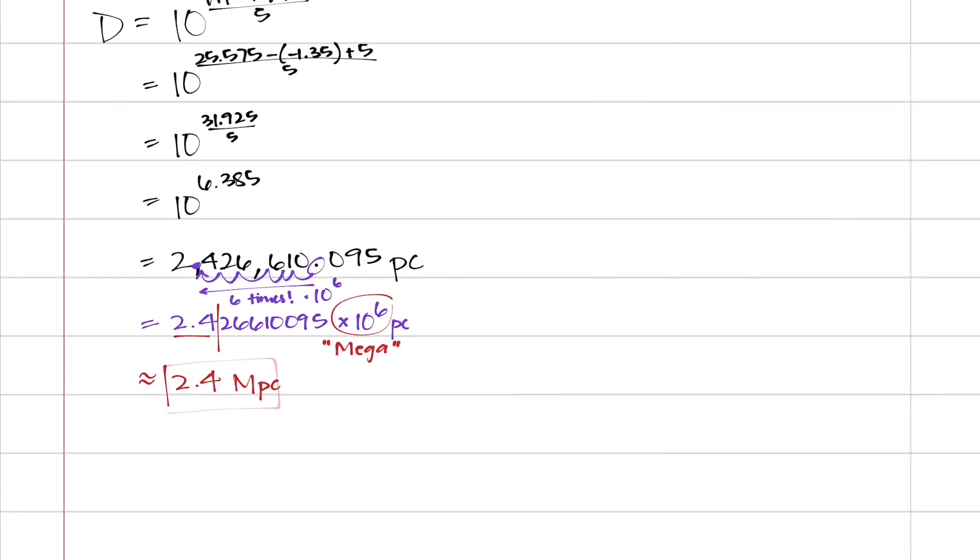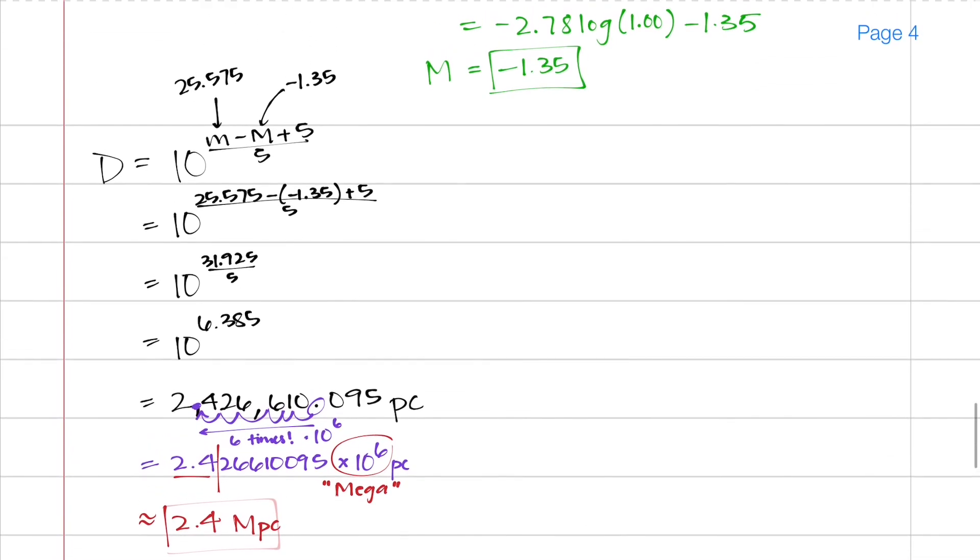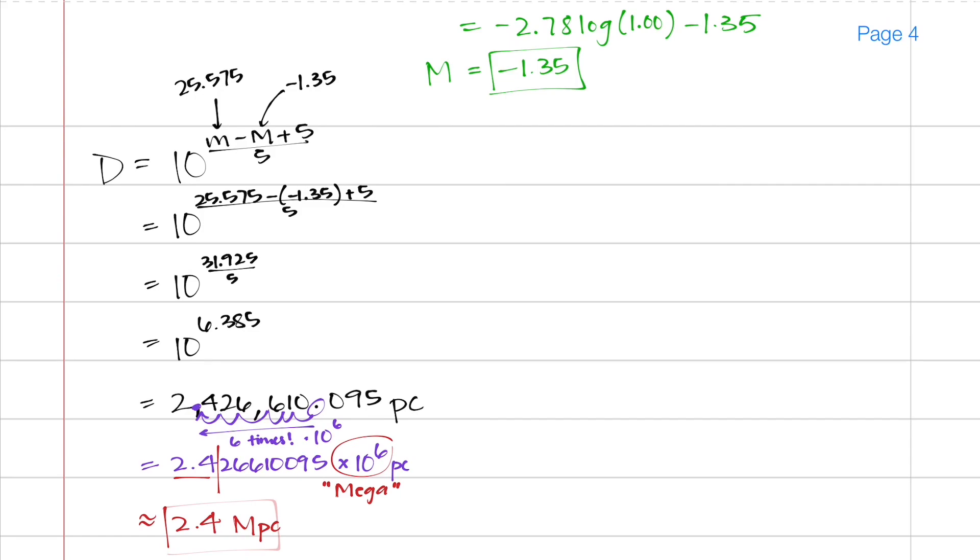So we've been able to find the distance to that particular Cepheid variable using the period luminosity curve that we had and Levitt's law. So hopefully this has been helpful and you have a better idea of exactly how to work through the worksheet. And it's given you a little bit of clarity, but if we still need some help, we can definitely look through it again in class.